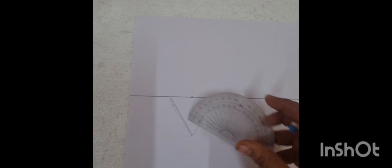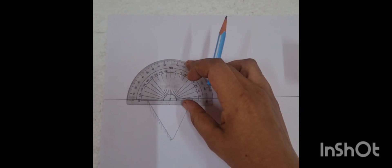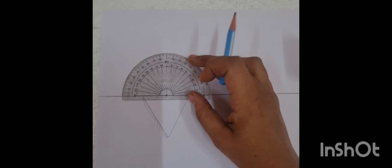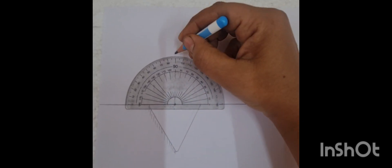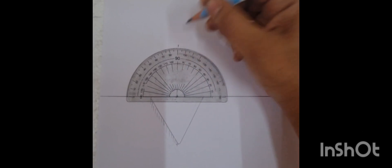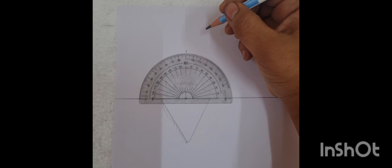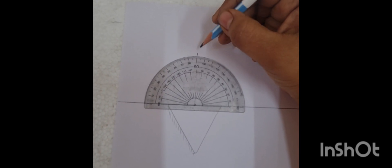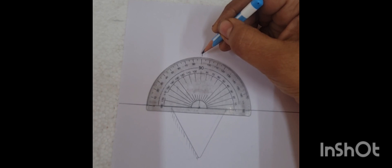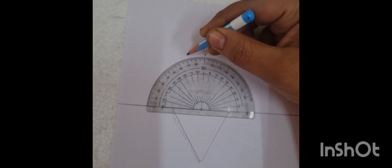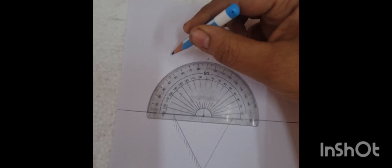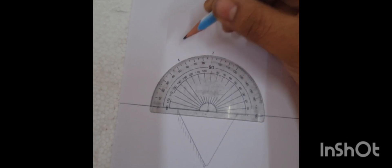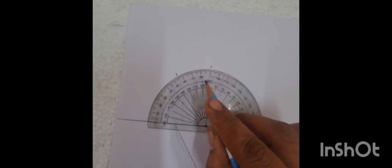Normal to the surface is perpendicular to the surface, 90 degrees. Angle of incidence will always be measured from normal to the surface. If we want angle of incidence 35 degrees, then from 90 to 80 is 10 degrees, 20, 30, and here is 35 degrees from the normal to the surface.